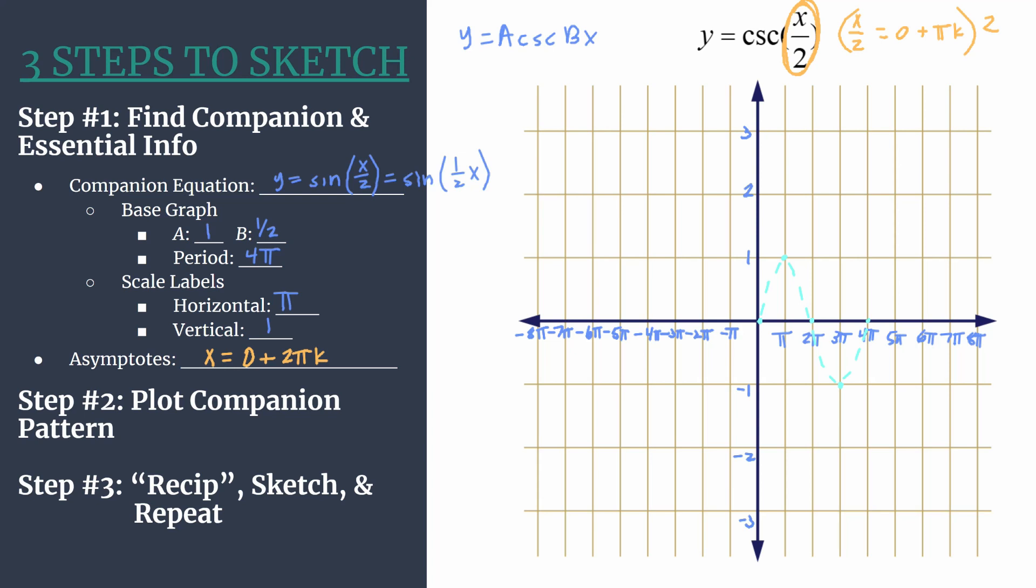Step three, we re-sip, sketch, and repeat. And so re-sip is just a word that I made up, the verb form, if you will, of take the reciprocal values. Now, if you know what cosecant graphs look like, you may not even have to do this. You can probably just work from the maximums and minimums of your companion pattern. But I will go through and show you a few examples of reciprocal values that help you create the cosecant curves.